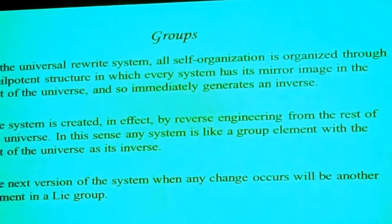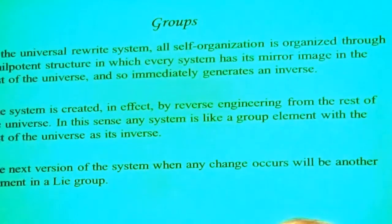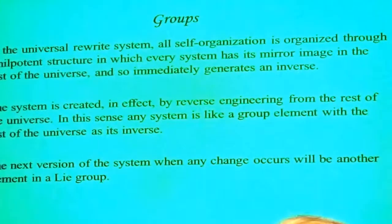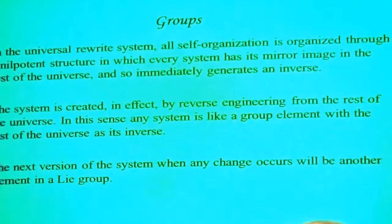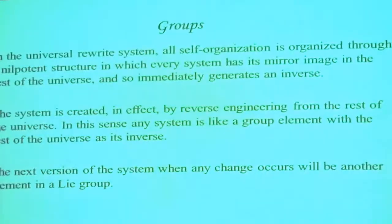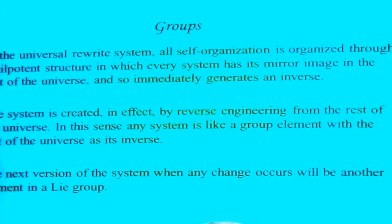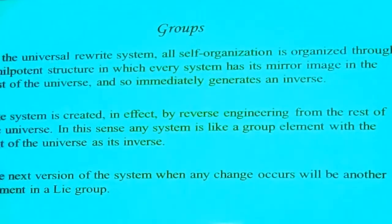All self-organization is organized through a nilpotent structure in which every system has its mirror image in the rest of the universe and so immediately generates an inverse. We can expect that, because we're connecting with the rest of the universe all the time, self-organization is true. We call it self-organization, but it's really universal organization — each system organizes itself and it organizes the rest of the universe and vice versa. Any system is like a group element with the rest of the universe as its inverse.